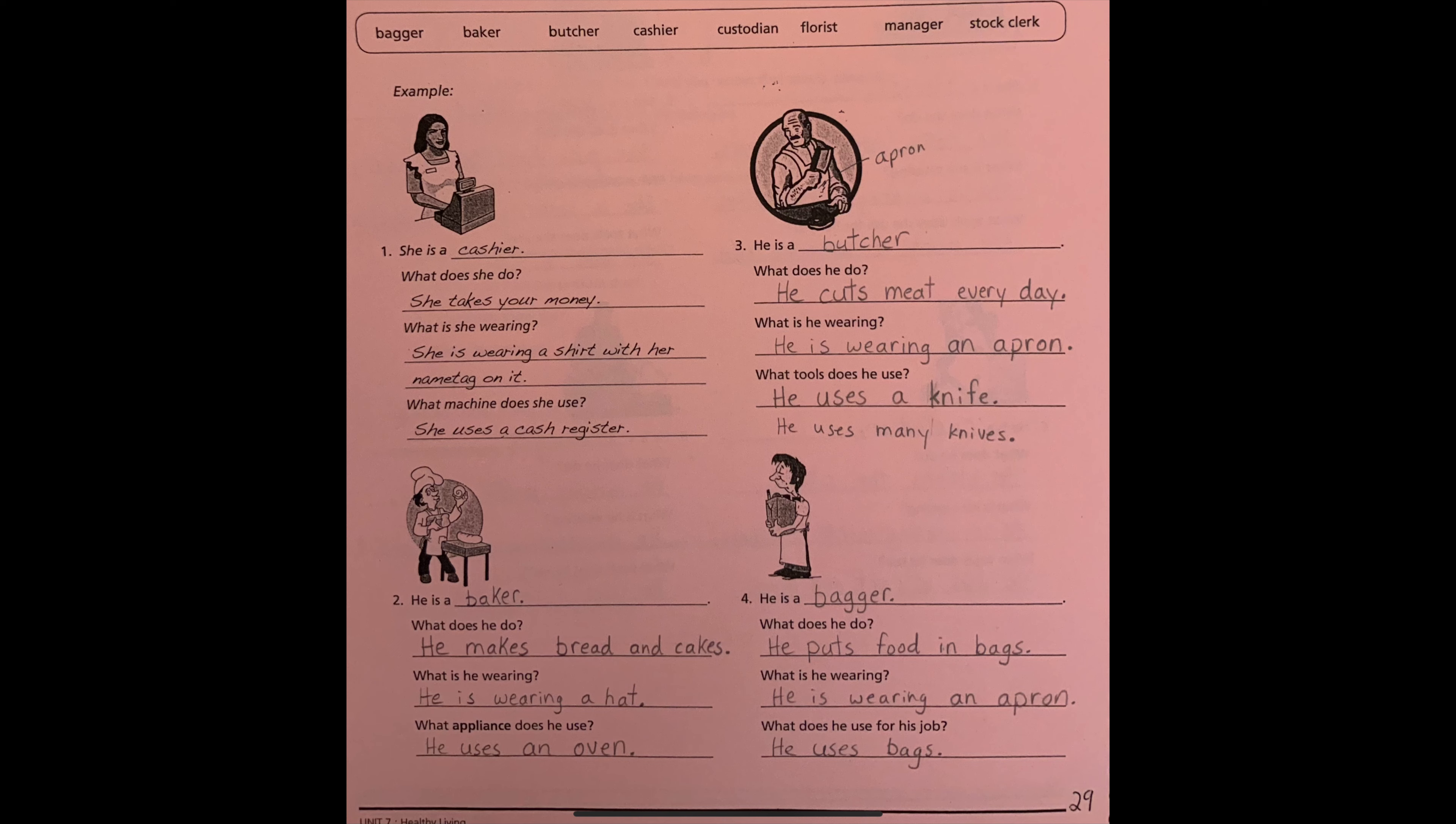What appliance does he use? Appliance means machine. He uses an oven. O-V-E-N. He uses an. Here we need A-N, because oven starts with an O.